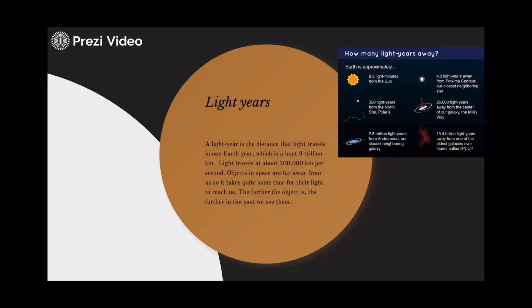Objects in space are very far away from us, so it takes quite some time for their light to reach us. The farther the object is, the further in the past we see it.